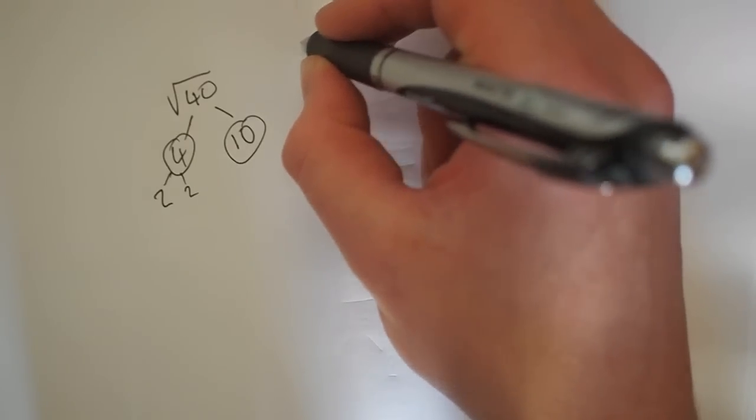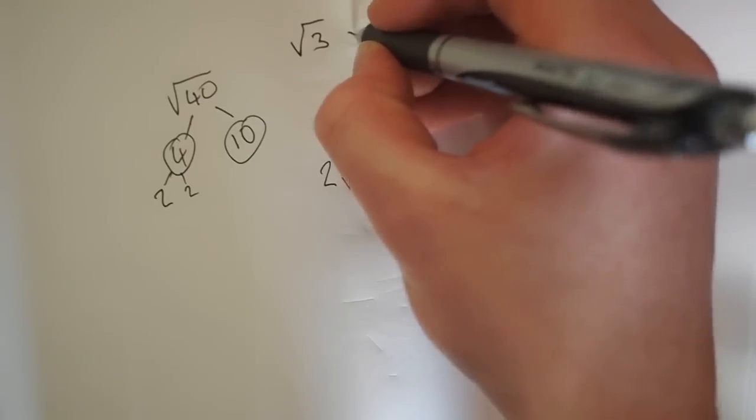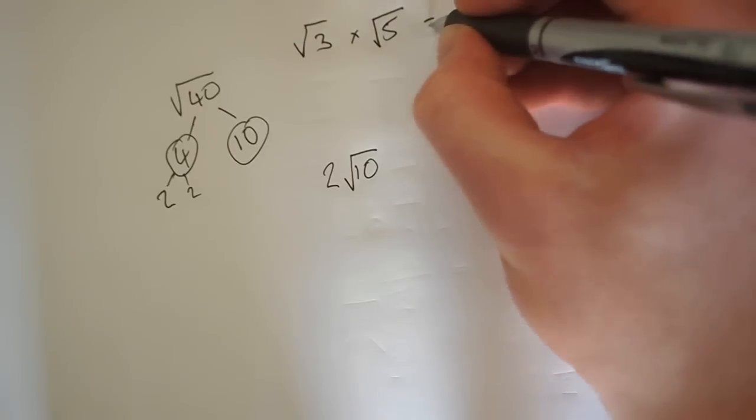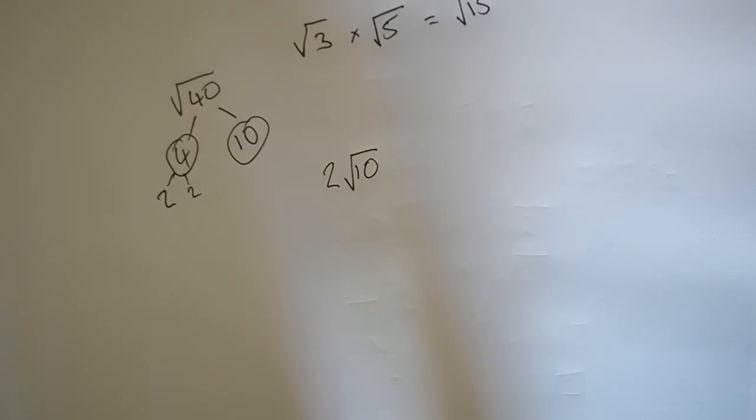But essentially you literally just multiply them together. Like say you have square root of 3 times square root of 5. It's the square root of 15.